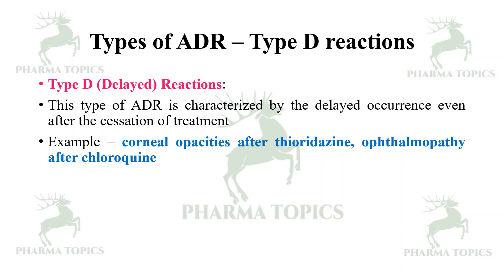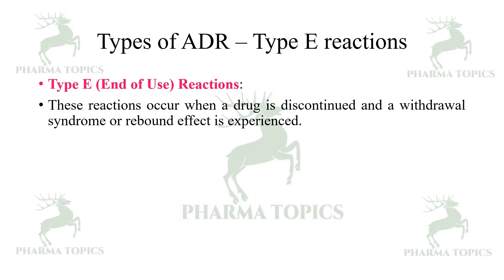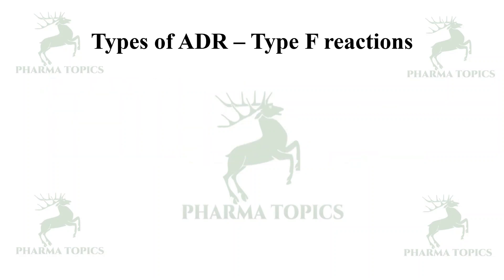Next is Type E reactions. Type E, or end-of-use reactions, occur when a drug is discontinued or withdrawn. A withdrawal syndrome or rebound effect is experienced. Examples include rebound hypertension, restlessness in opiate abstainers, and seizures on alcohol or benzodiazepine withdrawal.